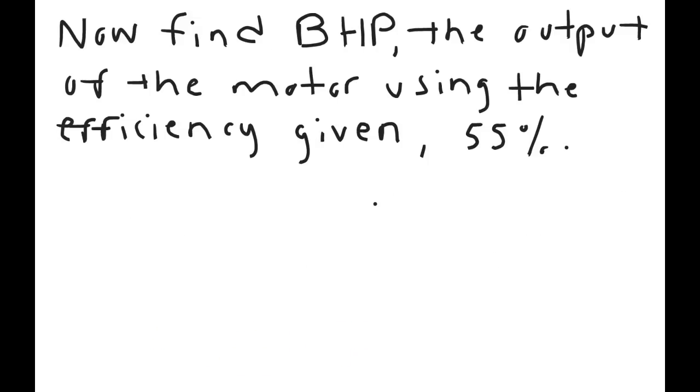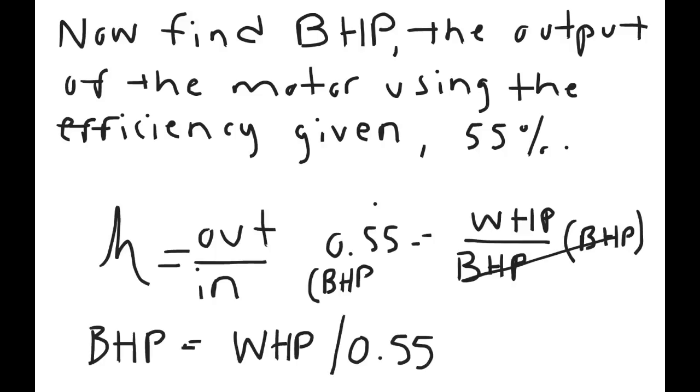Now that you have the output of the pump, you can find the output of the motor, or BHP, brake horsepower, using another equation of efficiency equals output over input. Given efficiency is 55%, so let's set up the equation. The equation is simply the efficiency equals output over input, which is always a rule of thumb.